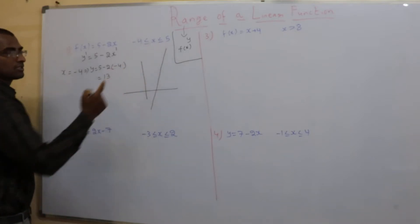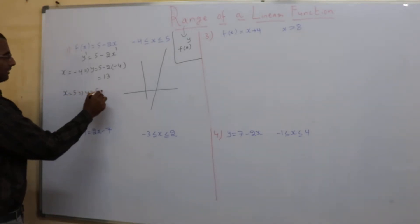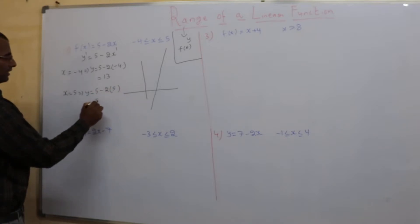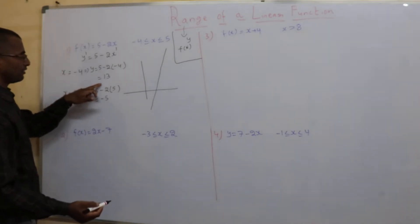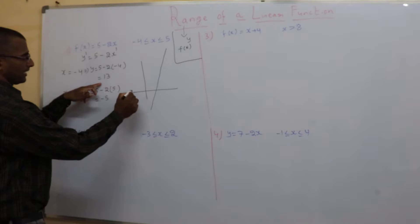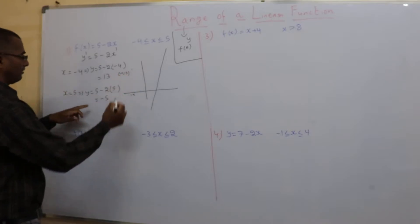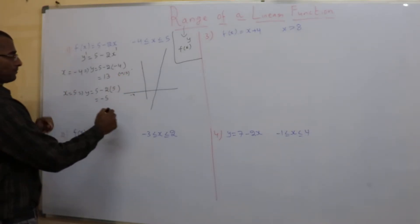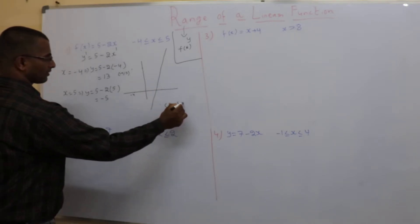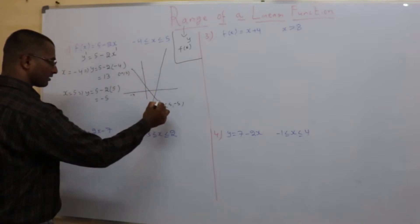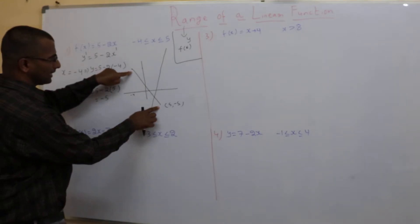Same way, when x is 5, how much will y be? y = 5 minus 2 times 5, which is minus 5. That means when x is minus 4, y is 13 — let's say somewhere around here. When x is 5, y is minus 5 — somewhere around here. So between these two values of x, my y value lies between these two.